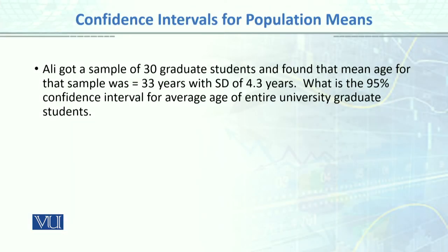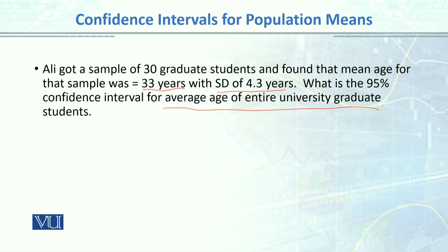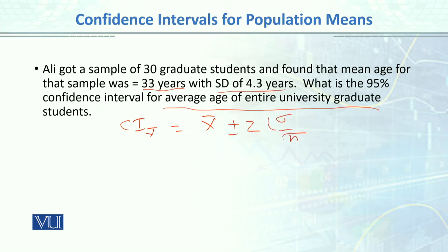Let's do an example. Ali got a sample of 30 graduate students and found that the mean age for that sample was 33 years. He knows the mean age is 33 years and the standard deviation is 4.3. This is the sample standard deviation and sample mean. What is the 95% confidence interval for the average age of all university graduate students? We write the confidence interval formula: sample mean plus or minus z times sigma over square root of n.